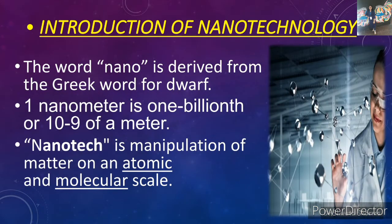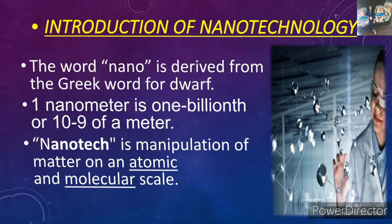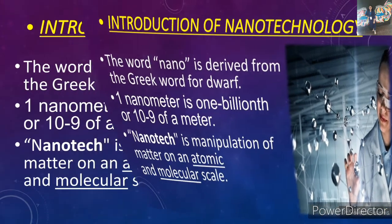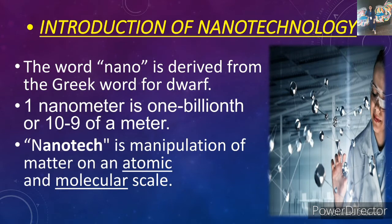Here is the introduction to nanotechnology. Basically, the word 'nano' is derived from the Greek word that means dwarf. One nanometer is one billionth — that means 10 to the power minus 9 of a meter. Nanotechnology is the manipulation of matter on an atomic and molecular scale.